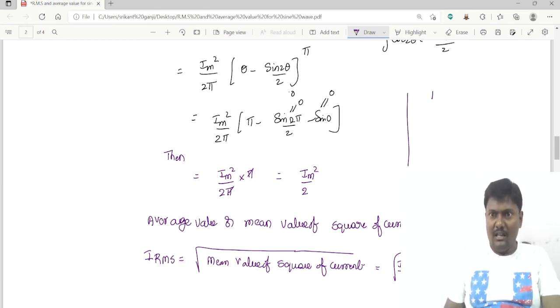Final value: I_RMS is equal to 0.707 times the maximum value. Similarly, V_RMS is equal to 0.707 times V maximum.